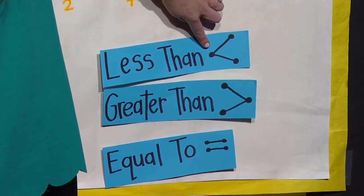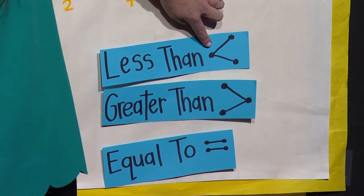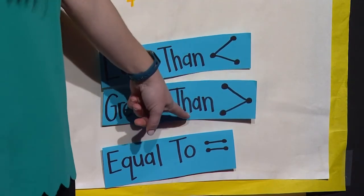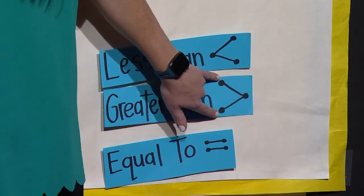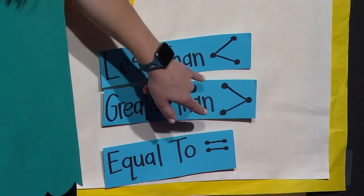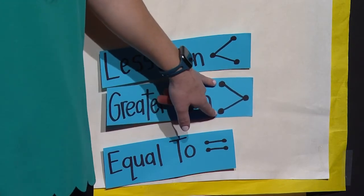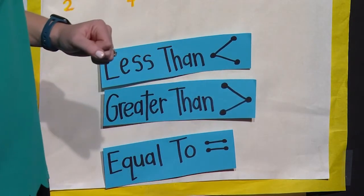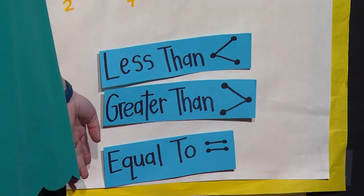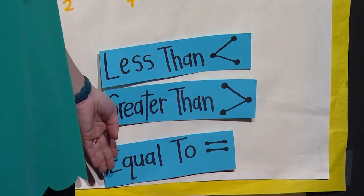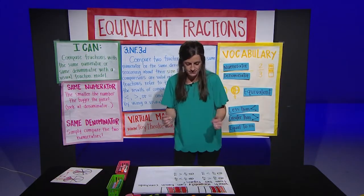I want to draw your attention to: if something is less than, it will have a single dot, or the closed portion of our symbol. The greater than symbol is going to be open to the fraction that is greater, so I like to put two dots — or just refer to it as the open side. And of course, if the two fractions have the same amount of space, they would be equal to. So let's go back to Karen.